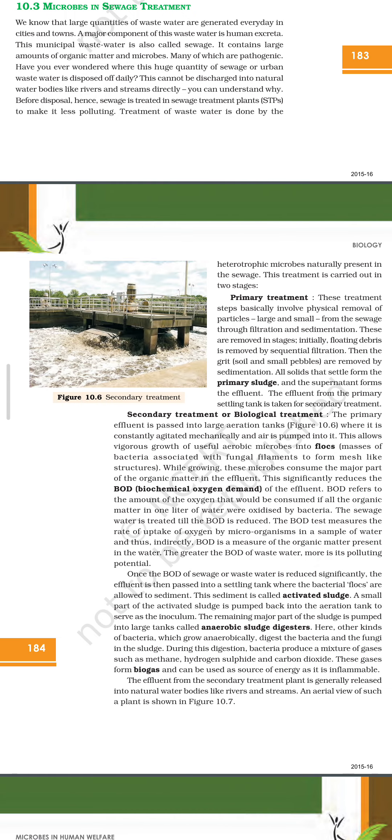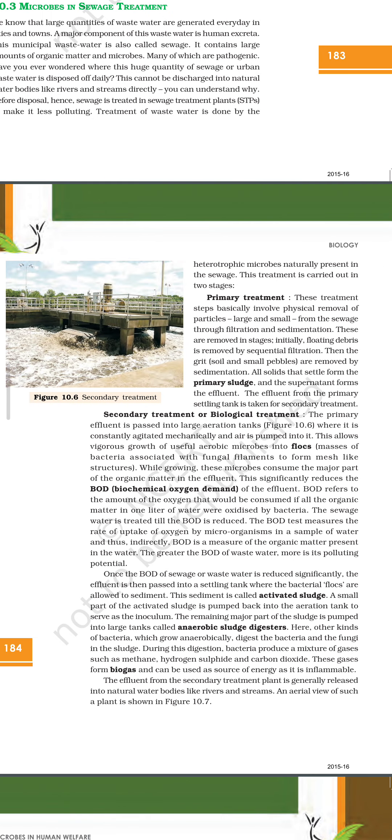Treatment of wastewater is done by heterotrophic microbes naturally present in the sewage. This treatment is carried out in two stages. We are taking the help of microbes — mainly heterotrophic bacteria. The treatment of wastewater is divided into two parts: primary treatment and secondary treatment.